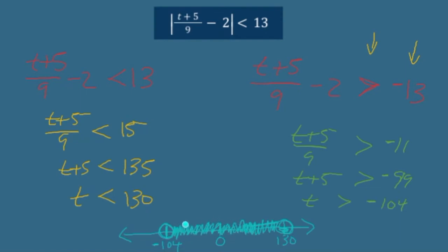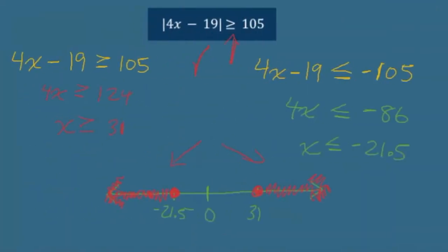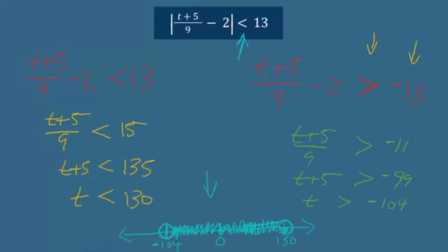I have to restrict my T values to between these endpoints. If you have a less-than situation, that's how your number line is going to look — we get restricted to a certain zone so that we can stay less than 13. Greater-than situation, we get prevented from entering a certain zone; we have to stay outside of a zone so that we can be bigger than 105. Less-than situation, we have to stay inside the zone so that we can remain less than.